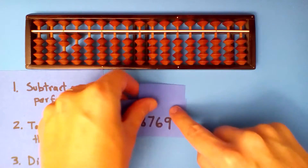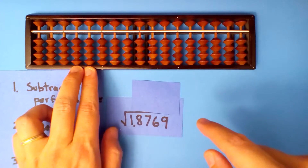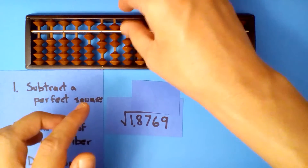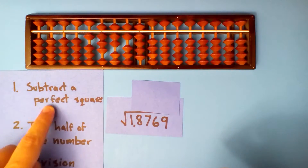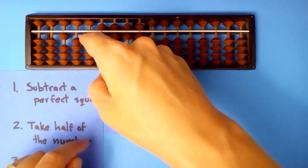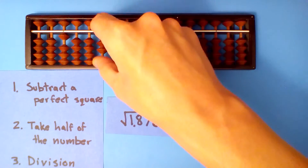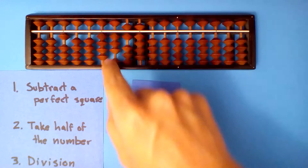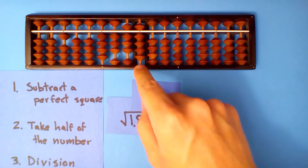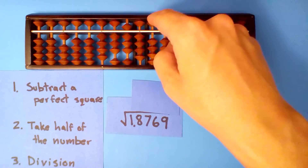The square root of 1.8769. The tens and ones, and the decimals 8, 7, 6, 9. Subtract a perfect square: one squared is one, so we subtract one. Take half of what's left. Half of 8 is 4. Half of 7 is 3 with one left over. Half of 16 is 8. Half of 9 is 4 with one left over. Half of 10 is 5.